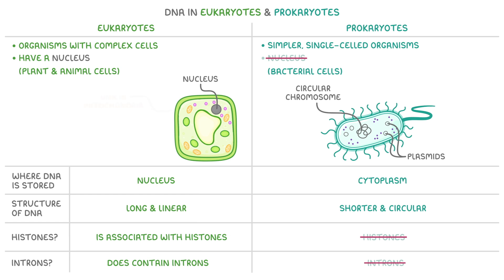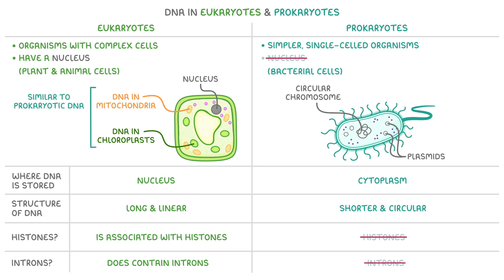Interestingly, the DNA in mitochondria and the DNA in chloroplasts, which are both organelles found in certain eukaryotic cells, is similar to prokaryotic DNA. It's short and circular and also not associated with histones, which suggests an ancient relationship between these organelles and bacteria.